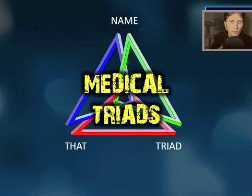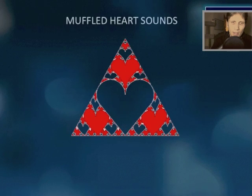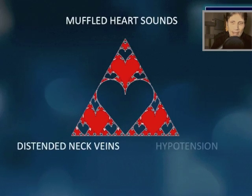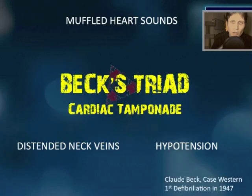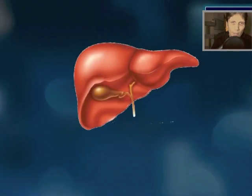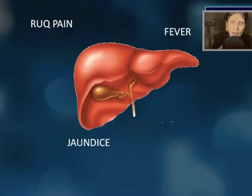Medical triads part one: eponyms. Here we go. Muffled heart sounds, distended neck veins, and hypotension — name the triad and the associated condition. This is Beck's triad (B-E-C-K), and you can see this with cardiac tamponade.